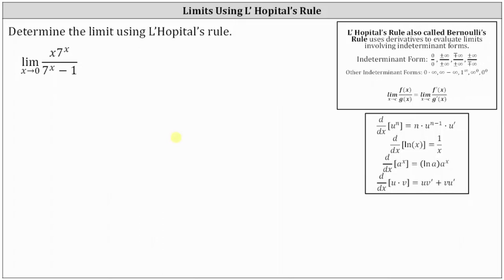We're asked to determine the limit using L'Hôpital's rule. Let's begin by checking the form of the limit. As x approaches zero, x times seven to the power of x approaches zero times seven to the zero, which approaches zero times one, or zero. And as x approaches zero, the denominator seven to the power of x minus one approaches seven to the power of zero minus one, which is one minus one, or zero. The limit is in the indeterminate form of zero divided by zero, one of the indeterminate forms shown here on the right where we can apply L'Hôpital's rule.